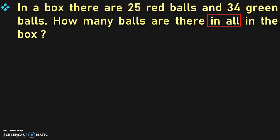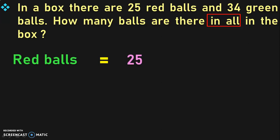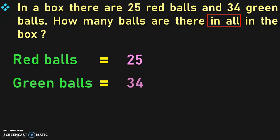First, let us write down the statements. You have read the story sum and identified the keyword 'in all'. The next step is to write the statements. Red balls = 25. Green balls = 34. From the keyword 'in all', we know that we are going to perform addition, so we are going to add these two numbers.